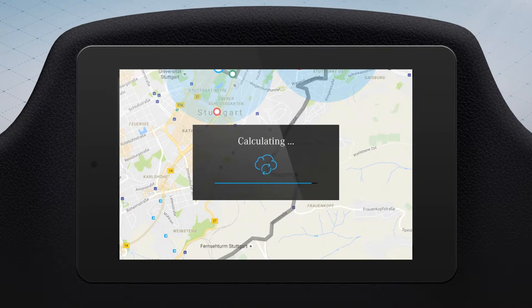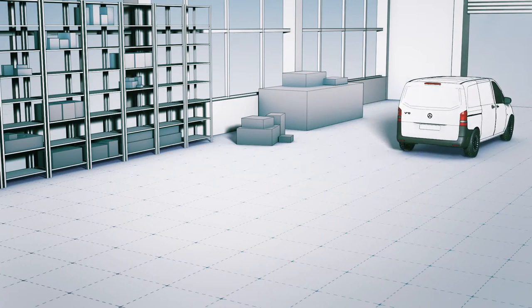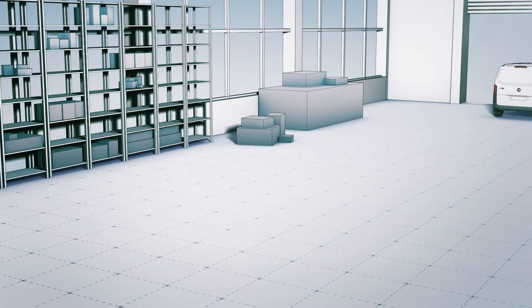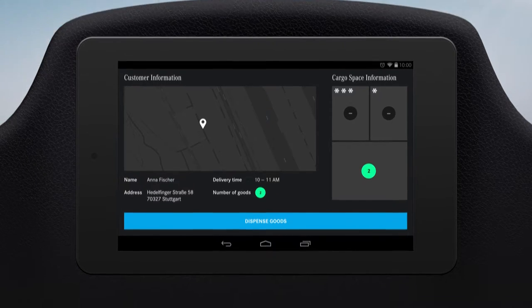The perfect route is calculated, and the vehicle is now ready to leave. The goods and their shelf location are stored in the onboard system, as is the route. The driver is informed of the next destination and the number of shipments for delivery.